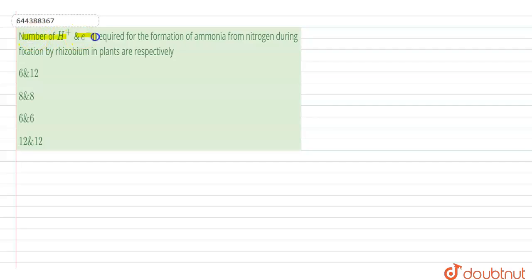The number of protons and electrons required for formation of ammonia from nitrogen during fixation of nitrogen by the rhizobium in plants is what?